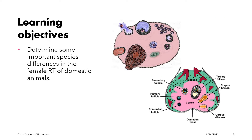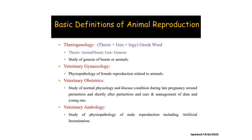This presentation shall aim to determine some important species differences in the female reproductive tract of domestic animals. In this case, we are going to compare the physiology as well as the anatomy of the ovary in domestic animals. Before we discuss the species differences in the ovary, let us first have an introduction to some important terms that we are going to encounter when studying animal reproduction.